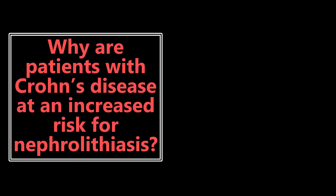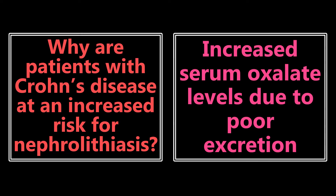Why are patients with Crohn's disease at an increased risk for nephrolithiasis? This is because of increased serum oxalate due to poor levels of excretion. Oxalate is typically excreted in the terminal ileum within the GI tract. Patients with Crohn's disease have inflammation and irritation of that area, so they are not excreting oxalate as much — it increases in the serum and can precipitate as kidney stones.